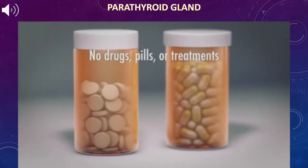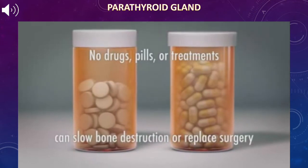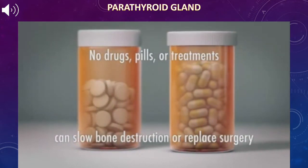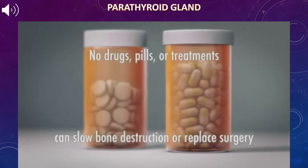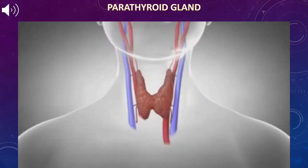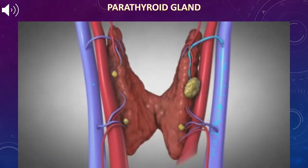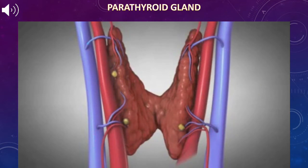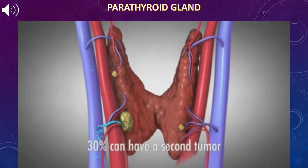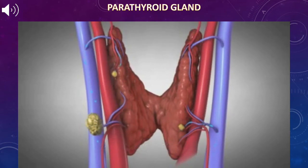There are no drugs, pills, or other treatments that can slow the process of bone destruction or take the place of surgical removal of the parathyroid tumor. Hyperparathyroidism is cured by surgical removal of the parathyroid tumor — an outpatient procedure that can often be completed in less than 20 minutes. Since as many as 30% of patients with hyperparathyroidism will have more than one parathyroid tumor, the surgeon will examine all four parathyroid glands to ensure a second tumor has not been left behind.